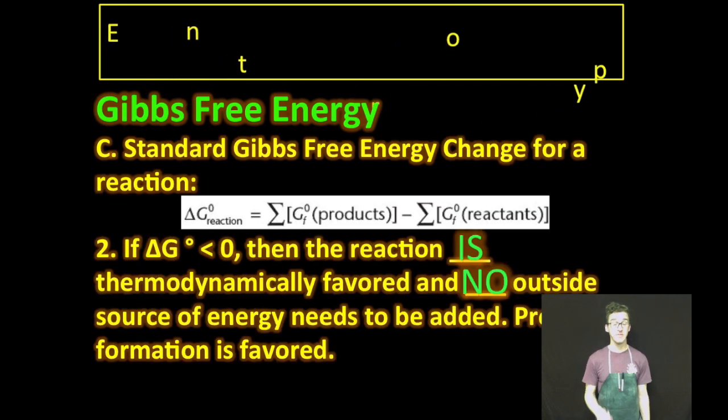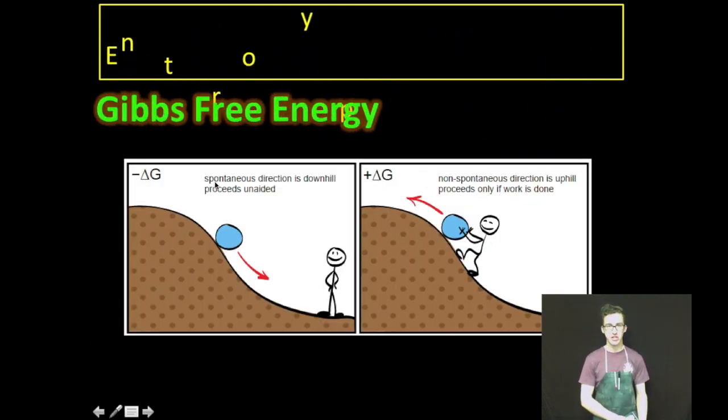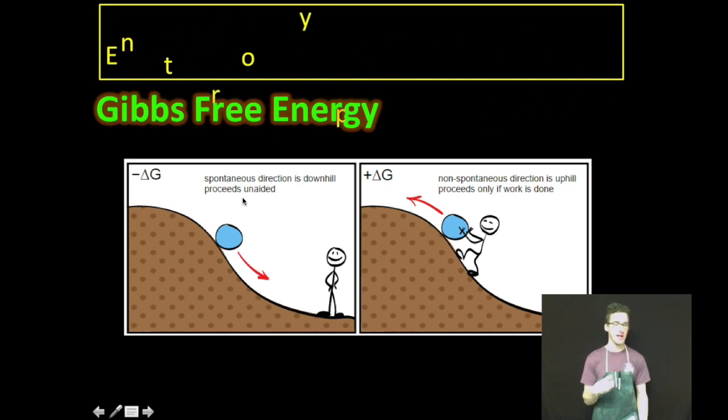On the other hand, if Gibbs free energy is less than zero, then the reaction is thermodynamically favored. No outside source of energy needs to be added. Product formation is favored. Negative delta G, spontaneous, thermodynamically favored, no outside source of energy required.